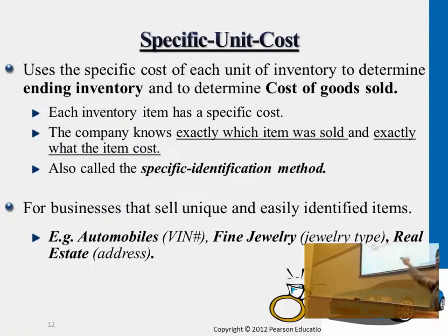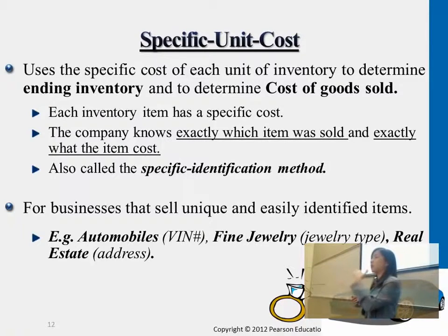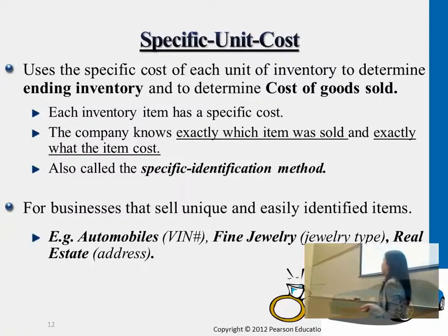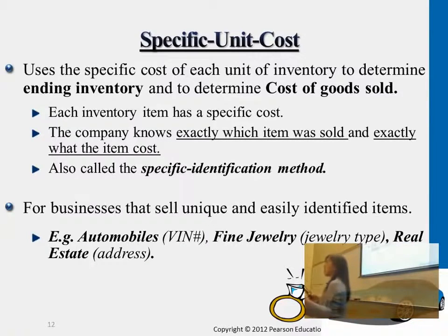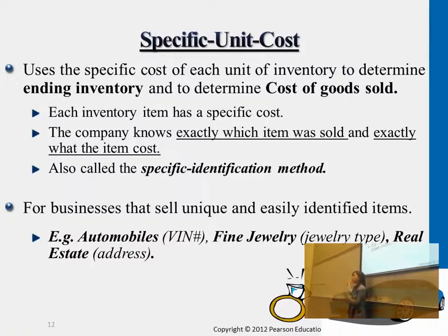For these products, there is usually a specific identification number for each item — for example, each Toyota Camry model. Even though it's the same model, the dealership keeps track of each car's original purchase price. When a customer purchases that exact car, they use the exact purchase price to journalize the transaction, tracking the specific product the customer is purchasing.